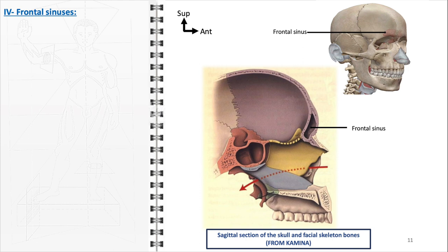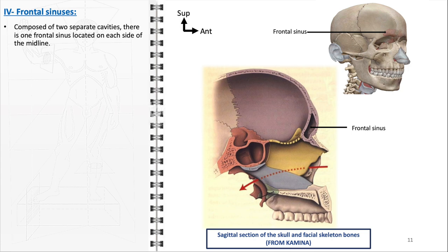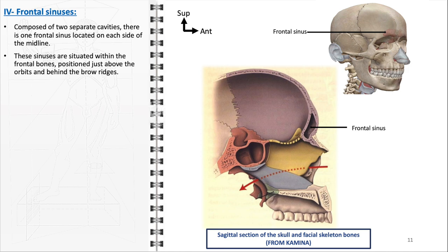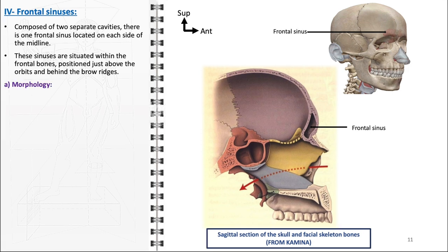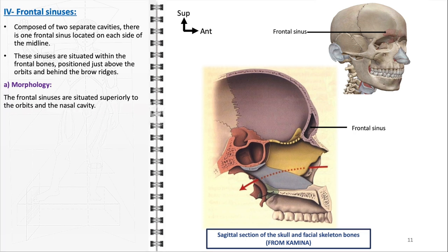The frontal sinuses are a significant part of the paranasal sinus system, characterized by their unique location and structure. Composed of two separate cavities — one on each side of the midline — they are symmetrically arranged to ensure a balanced facial structure and function. These sinuses are situated within the frontal bones, positioned just above the orbits and behind the brow ridges. Morphologically, the frontal sinuses are typically pyramidal or triangular in shape. Each sinus is situated superiorly to the orbits and the nasal cavity, a location important for the drainage and health of the sinus.